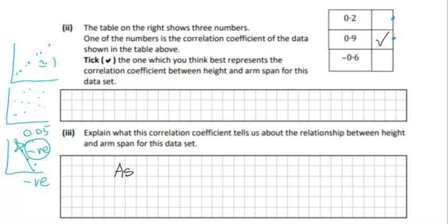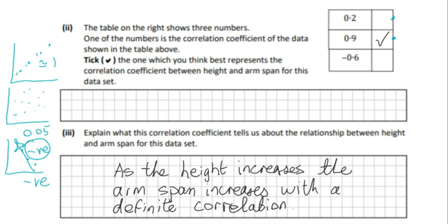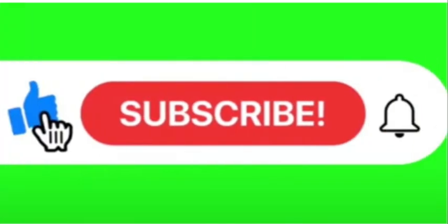So all we need to do is write that in. As the height increases, the arm span increases with a definite correlation. Thank you for joining Maths Plus. Like and subscribe to the channel. Thank you.